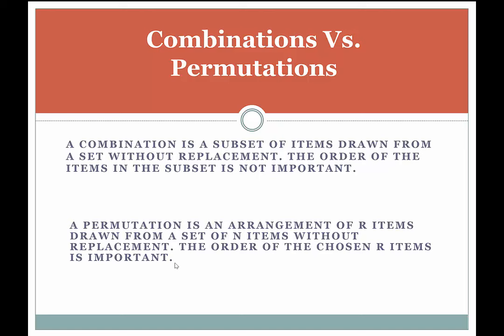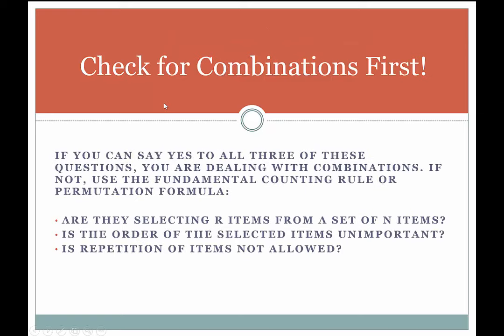If you consider order important, you'll generally have a much larger answer than if order is unimportant. My recommendation is: check for combinations first. If you're solving a counting problem — you recognize it because it asks 'how many' — assume it's a combination first and then try to disprove it by answering three questions. If you can say yes to all three, use the combinations formula.